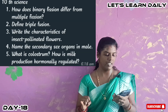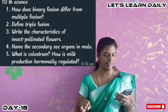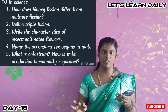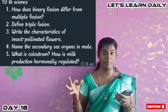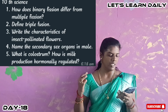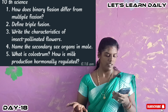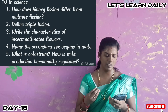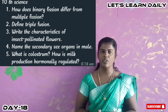Next is 10th science: binary and multiple fission, insect pollinated flowers and their characters — brightly colored flowers, secondary sex organs in male, what is cholesterol, and how is milk production hormonally regulated. In this lesson we will take two marks and four marks, and cover all the portions.